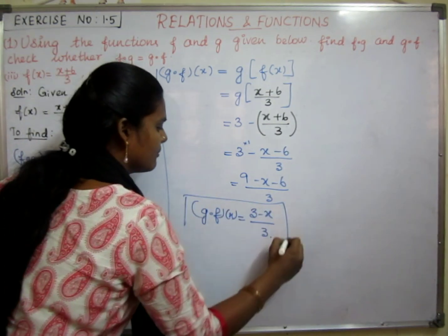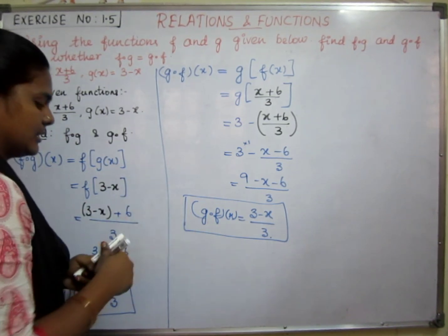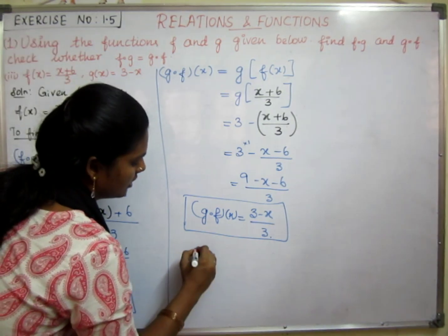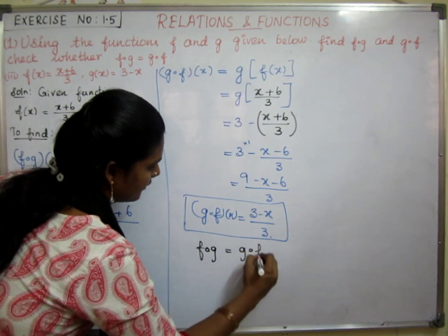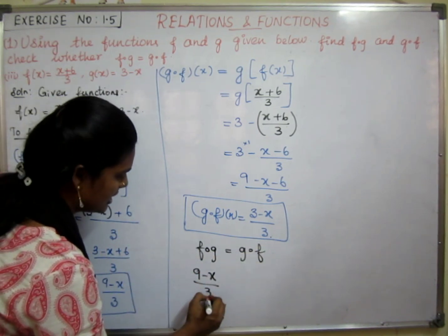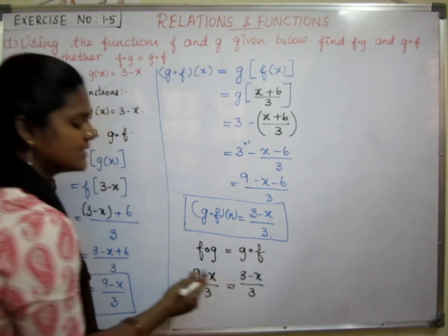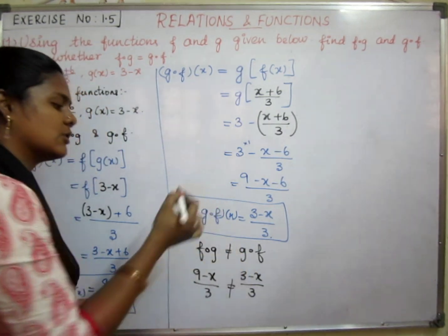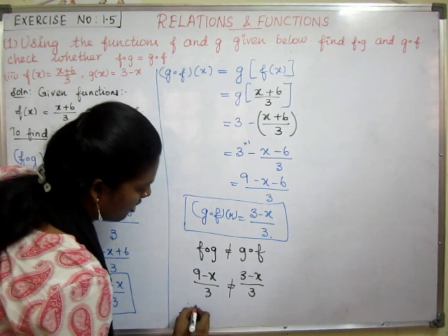Now let's check the value of g∘f and check whether both are equal or not. So f∘g equals (9 minus x) divided by 3, and g∘f equals (3 minus x) divided by 3. Is it equal? No, it is not equal. So f∘g value is not equal to g∘f.